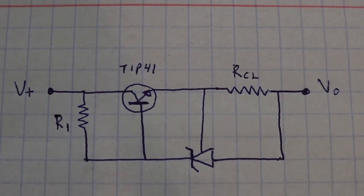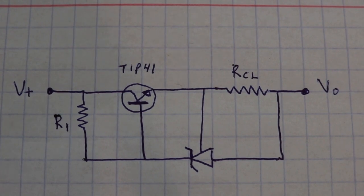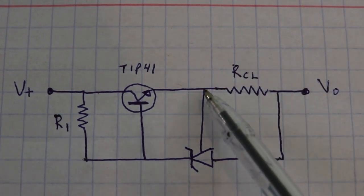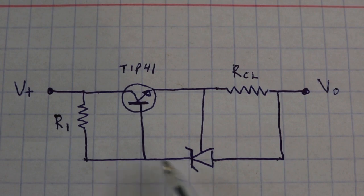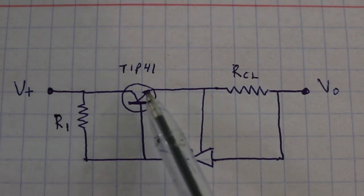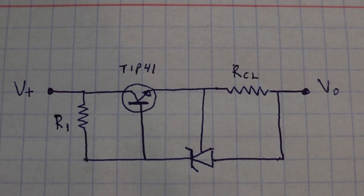To the contrary, if we have less current, then we will have less voltage here, more voltage here, and the transistor conducts more, and the current will increase.